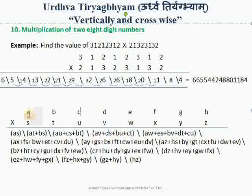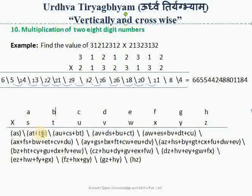We consider the first three columns: A into U plus C into S plus B into T. Then the first two columns: A into T plus B into S. Finally, we multiply the most significant digits of the two numbers: A into S, and write on the left hand side of our result.